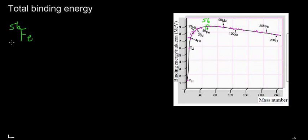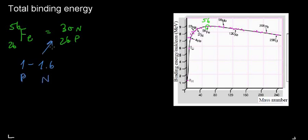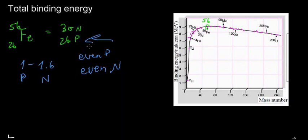Looking at the graph, the higher up on the y-axis — binding energy per nucleon — the more stable the isotope. At the top is iron-56, which has 26 protons and 30 neutrons. If we look at the ratio of protons to neutrons, it's close to the 1-to-1.6 ratio we discussed. Also, having an even number of protons and an even number of neutrons means we ideally see the most stable isotopes, so iron-56 follows both rules and is very stable.